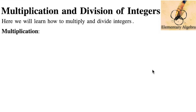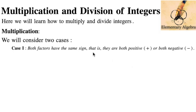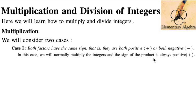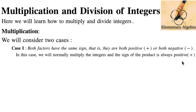For multiplication, we will consider two cases, similarly to our addition. The two integers that we multiply are called factors, and the answer is called the product. For Case 1, both factors have the same sign — they are both positive or both negative. In this case, we normally multiply the integers and the sign of the product is always going to be positive.